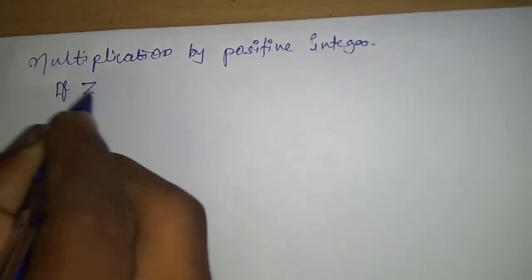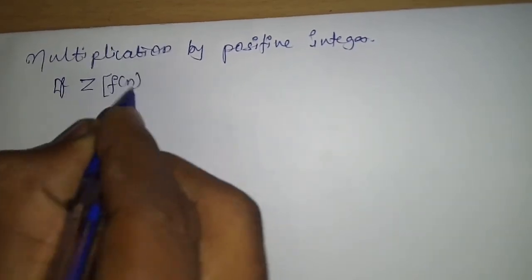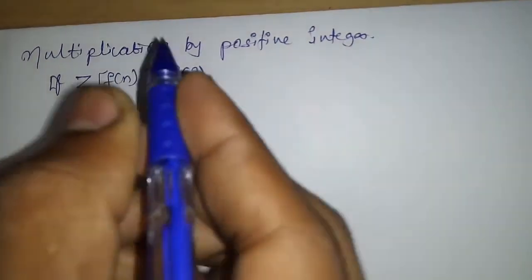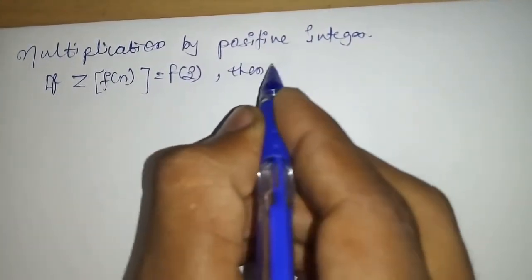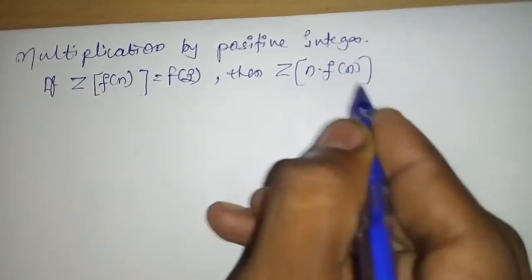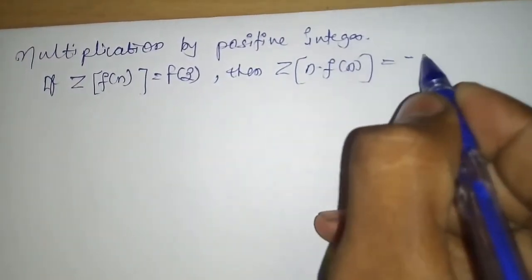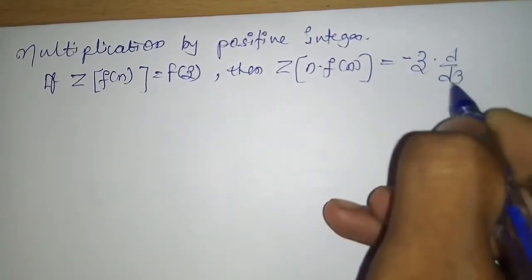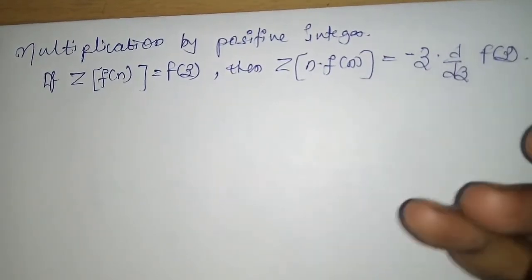If Z-transform of F of M is equal to capital F of Z, then Z of N into F of M is equal to minus Z into D by DZ of capital F of Z. This is the property we have to prove.